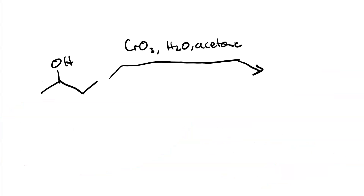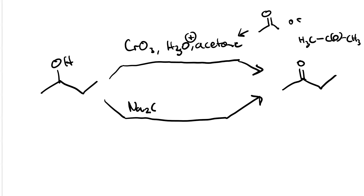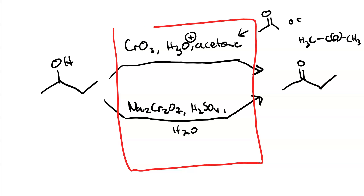For example, if you see 2-butanol reacted with chromium trioxide, H₃O⁺, and acetone — which can be written several ways including with the O in parentheses — that's Jones reagent and it gives you oxidation. Another way to show it is sodium dichromate (Na₂Cr₂O₇), sulfuric acid (H₂SO₄), and water. These are two ways of generating Jones reagent in situ.